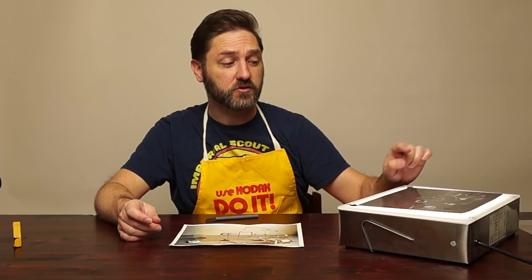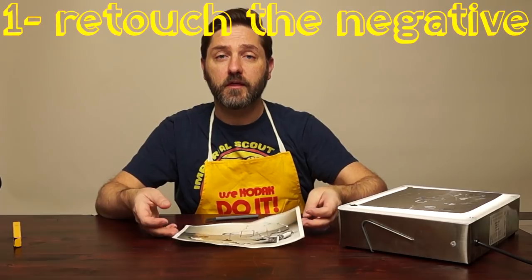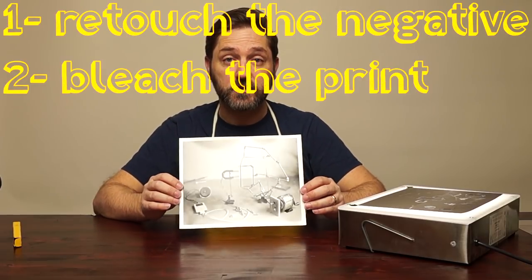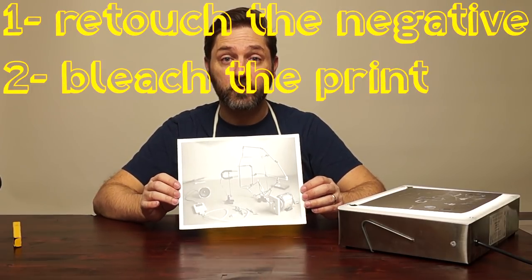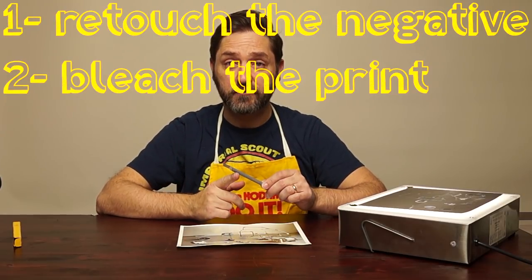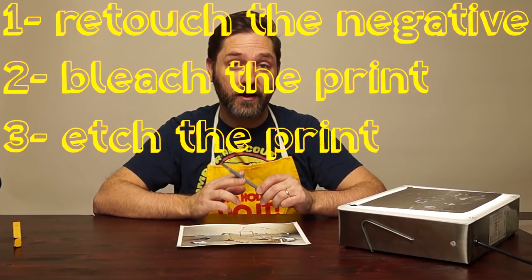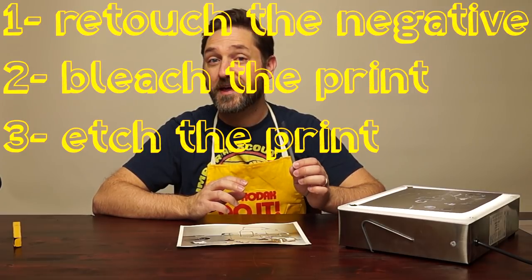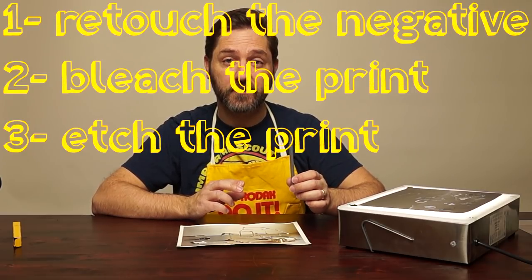So you really are left with three options. The first would be to retouch the negative, then you could bleach the spot itself in the dark room. And third, you could use a retouching knife and actually scratch it out, also called etching. So I'll show you all three techniques.